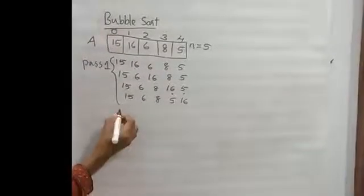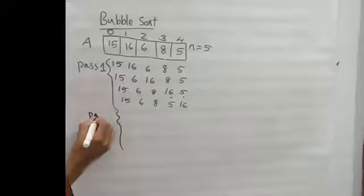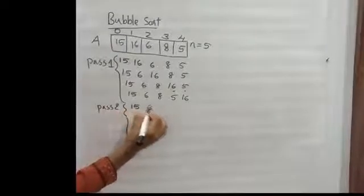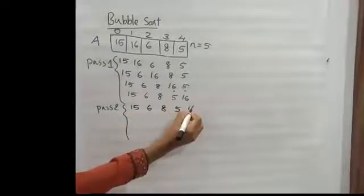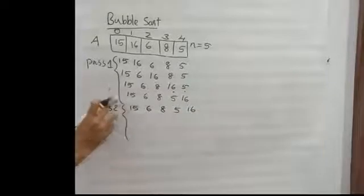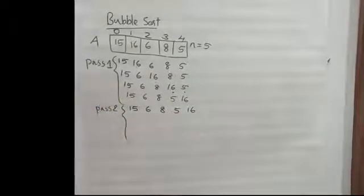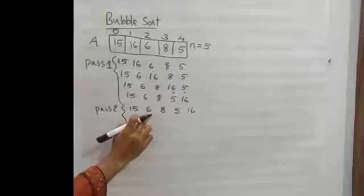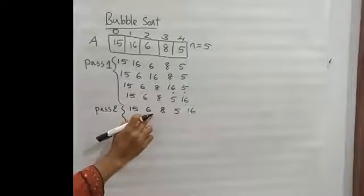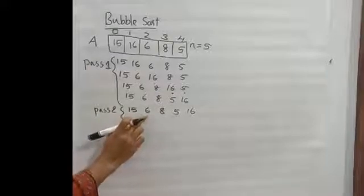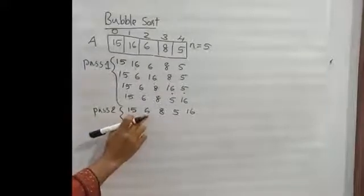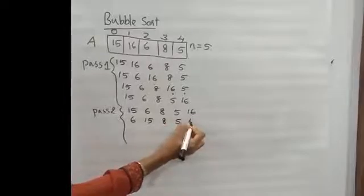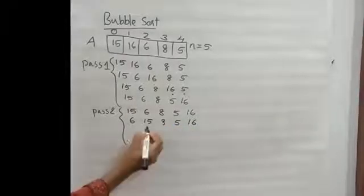Pass two. We will repeat the process. Compare the first index with the next. 15 is greater than 6, so interchange. Array becomes 6, 15, 8, 5, 60. Then 15 is greater than 8, so interchange. Array becomes 6, 8, 15, 5, 16.